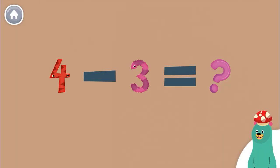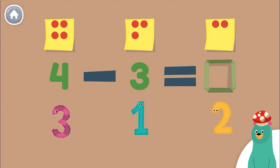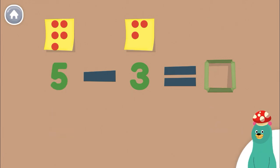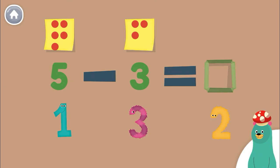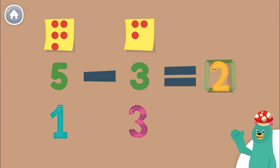Let's do some subtraction. We're going to subtract some numbers. What is four take away three? Drag the number to the green square. One. Great job! Four minus three is one. What do you get when you take three away from five? Two. Yay! Five minus three is two.